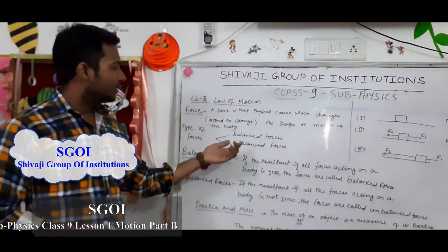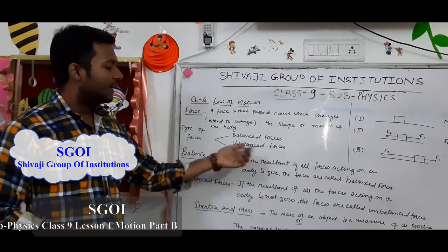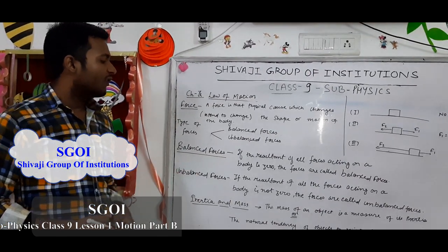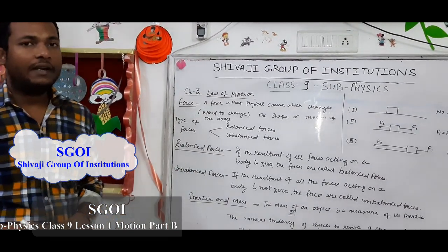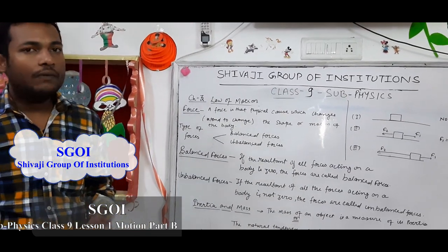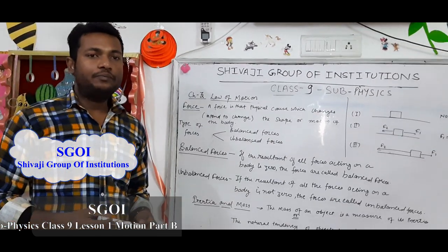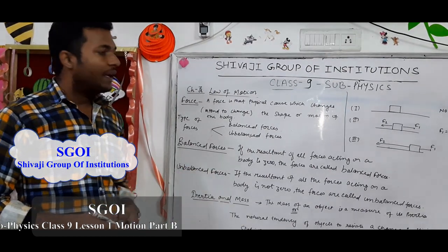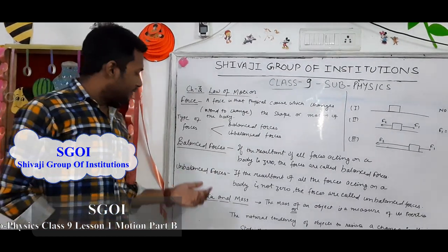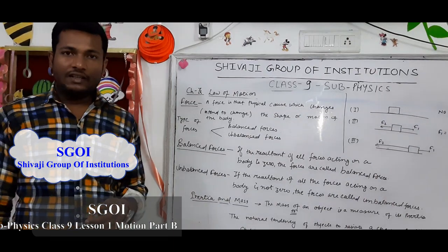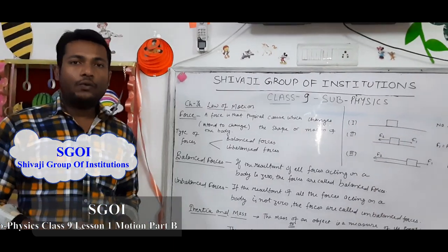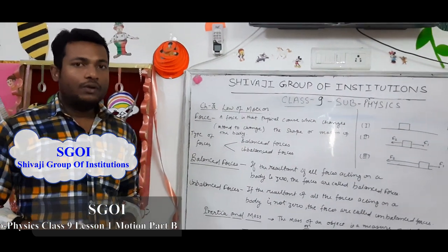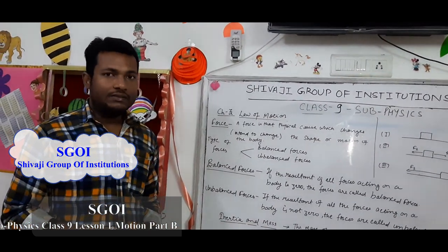There are two types of forces: first, balanced forces, and second, unbalanced forces. If the resultant or net of all the forces acting on a body is equal to zero, then this is called balanced forces. If the resultant or net of all the forces acting on a body is not equal to zero, then this is called unbalanced forces.